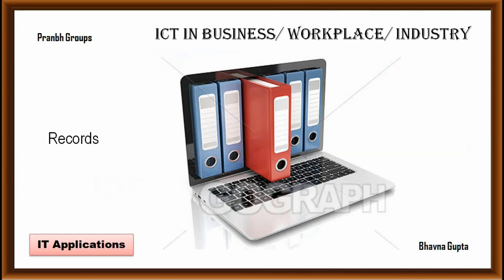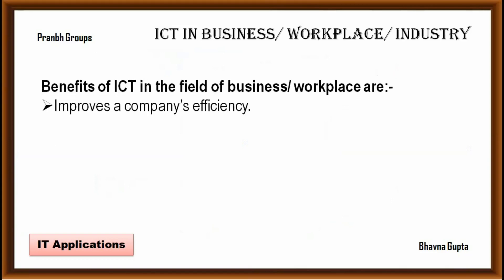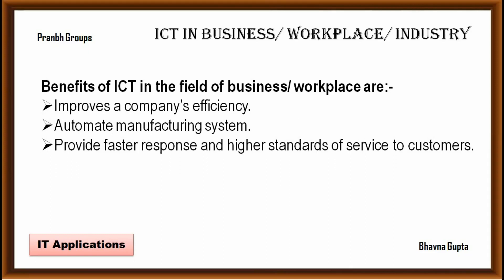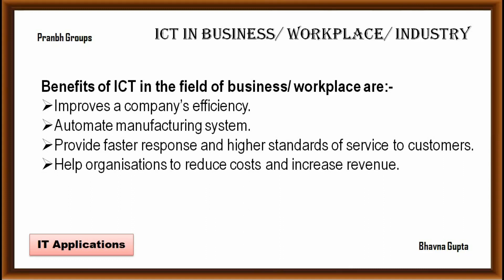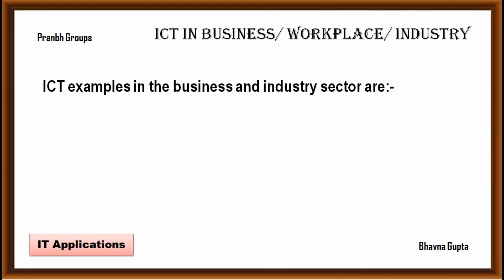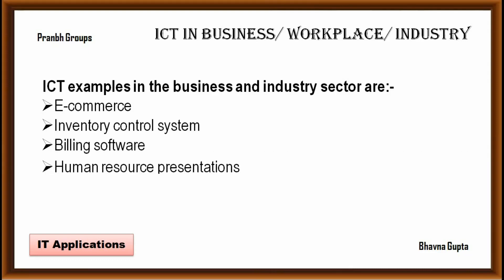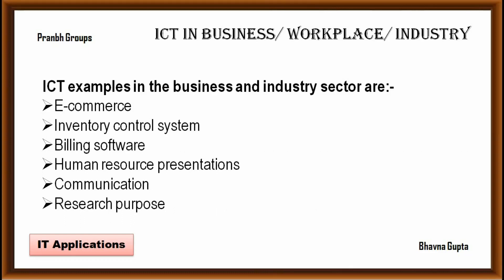Some benefits in the field of business: first, improve company efficiency by automating routine processes and providing employees with ICT tools to improve individual productivity. Second, automated manufacturing systems help in producing quality products in shorter durations. Third, provide faster response and higher standards of service to customers, and help organizations reduce costs and increase revenue. Examples of ICT in business include e-commerce, inventory control systems, billing software, HR systems, communication, and research.